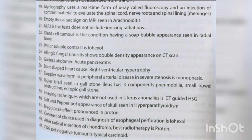Giant cell tumor — soap bubble appearance seen in the radial bone. Water-soluble contrast is iohexol. Allergic fungal sinusitis shows double density appearance on CT. Gasless abdomen is seen in acute pancreatitis. Boot-shaped heart is caused by right ventricular hypertrophy. Doppler waveform in severe peripheral arterial stenosis is monophasic. The regular triad seen in gallstone ileus includes pneumobilia, small bowel obstruction, and ectopic gallstone. Imaging technique not used in uterine anomalies is CT-guided HSG.